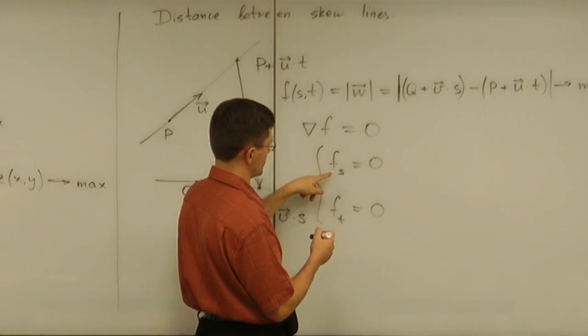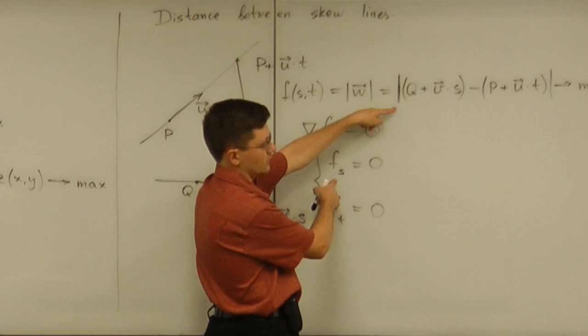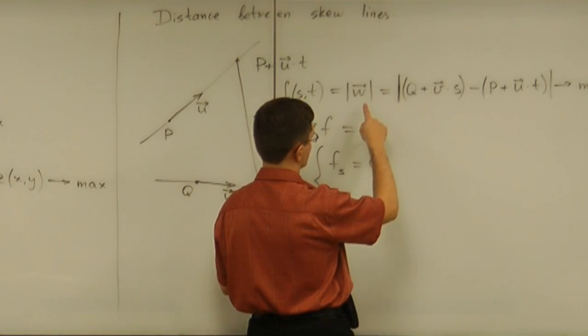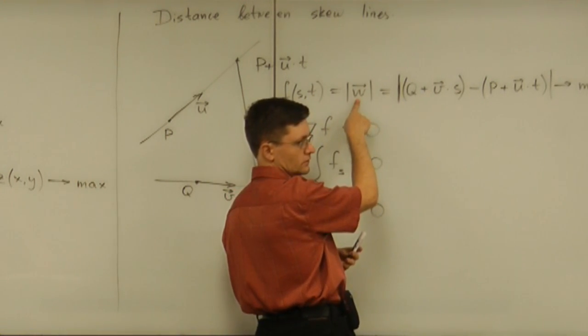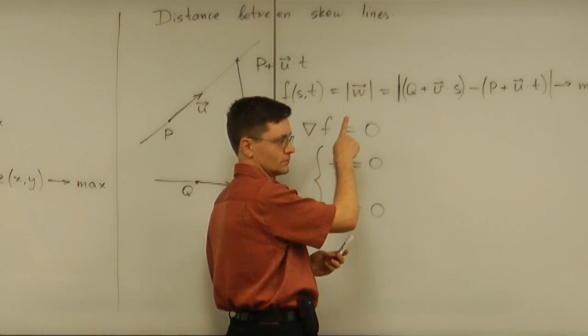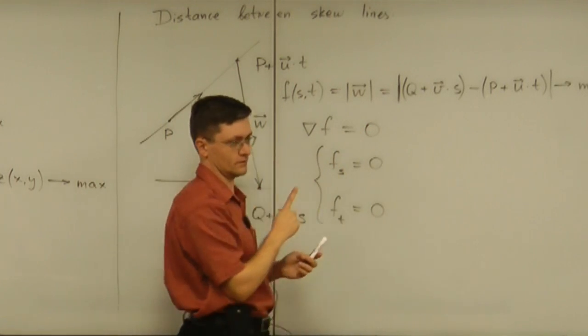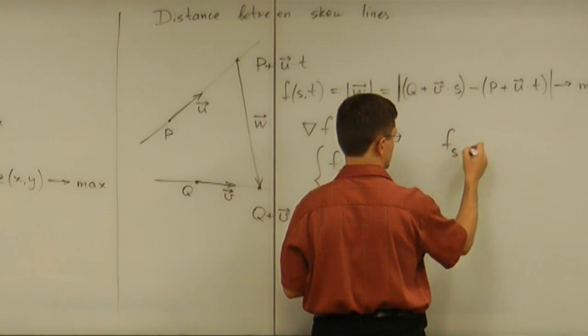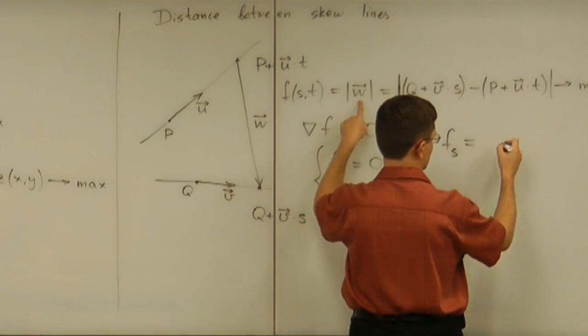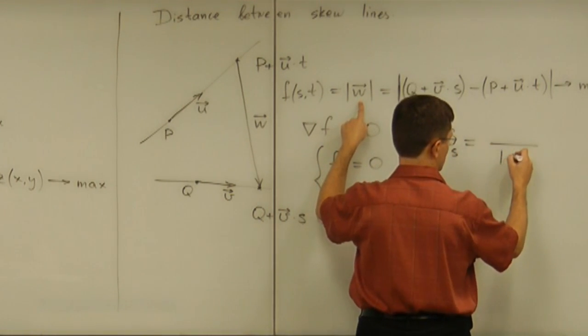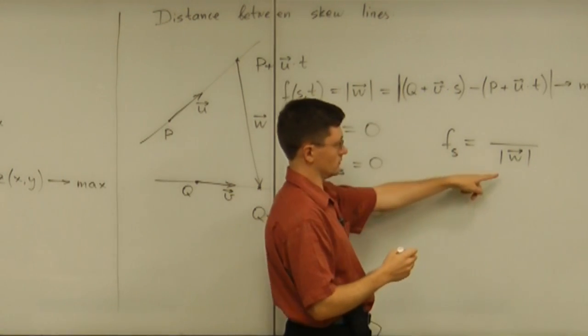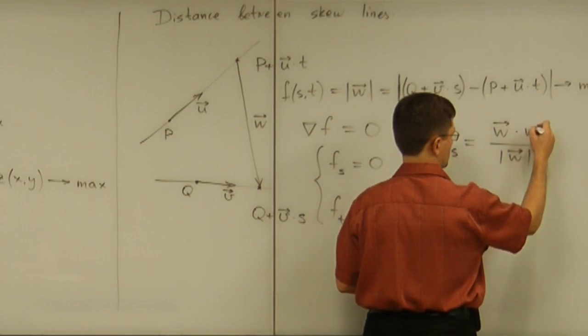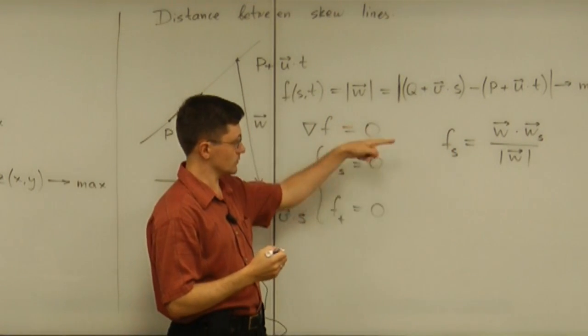So, how would we differentiate that expression with respect to s? Well, we can treat that expression as composition. We should differentiate this with respect to w, which is a non-trivial operation on its own. Because differentiation of the magnitude of a vector is not a simple thing, but we did it several times. So, the partial of f with respect to s is going to be derivative of that, which is what? The magnitude of w goes in the denominator.